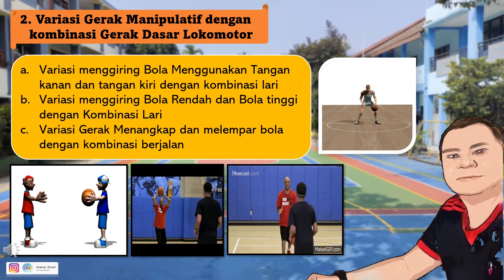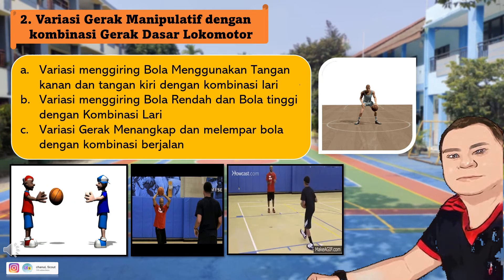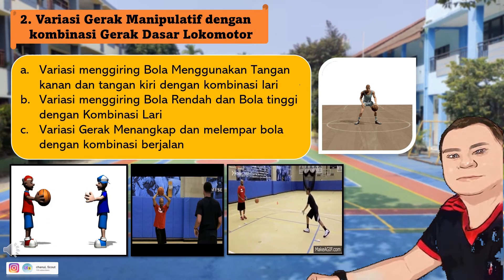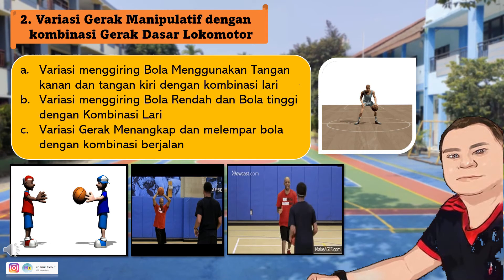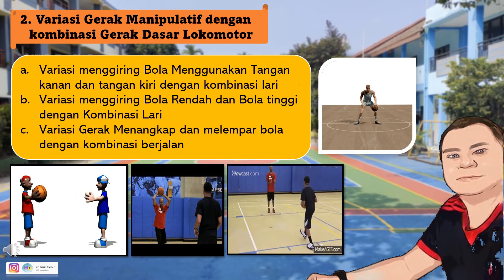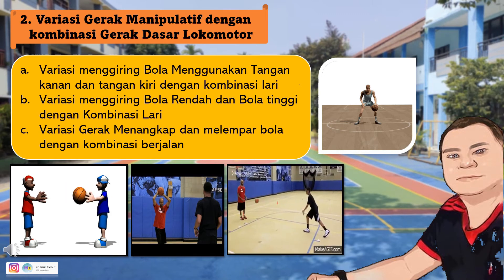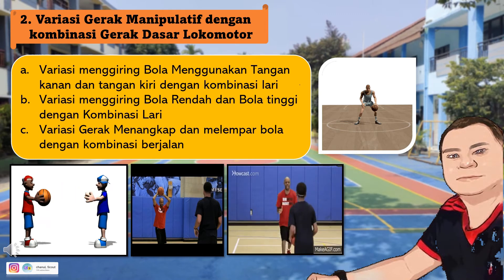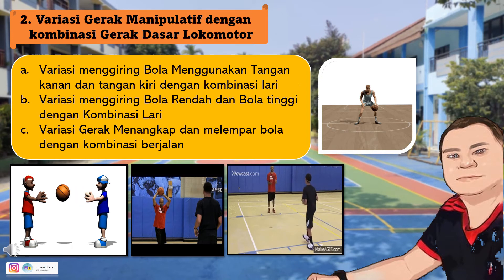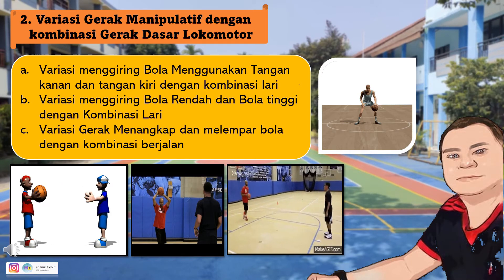Yang kedua: variasi gerak manipulatif dengan kombinasi gerak dasar lokomotor. Gerak lari dilakukan bertujuan untuk berpindah tempat dengan cepat. Dengan berlari cepat kamu dapat mengejar bola, menangkap bola, mengumpan bola, dan menggiring bola. Menggiring, menangkap, mengumpan, dan melempar bola dapat dikombinasikan dengan gerak lari. Yang A: variasi menggiring bola menggunakan tangan kanan dan tangan kiri dengan kombinasi lari.